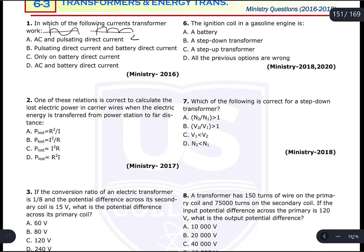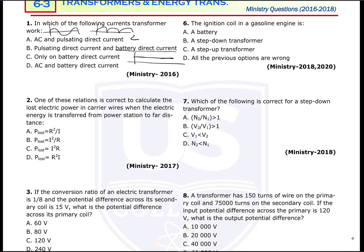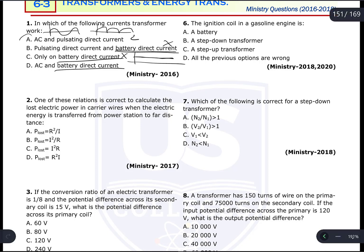Battery direct current does not change in direction or magnitude. So if there is no change in current in the primary coil, there will be no change in magnetic field, no change in magnetic flux through the secondary coil, and no induced EMF in the secondary coil. So battery DC alone is not the answer — only AC and pulsating DC work. The correct answer is A.